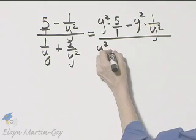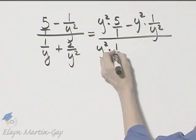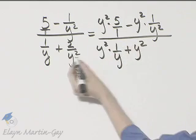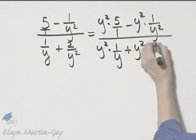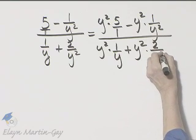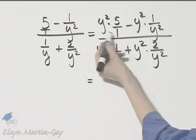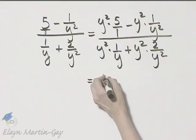Y squared times 1 over y plus y squared times 2 over y squared. Now, let's see what happens. Notice this is just 1, so I have y squared times 5. I'll write that as 5y squared.